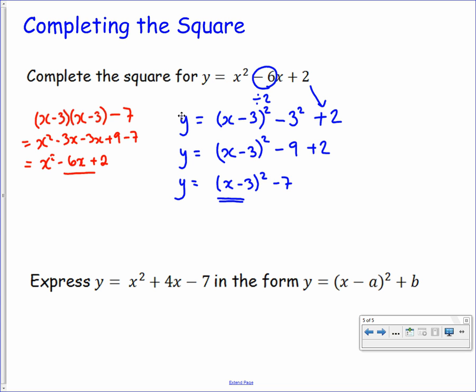The same goes for the second one here. Express y equals x squared plus 4x minus 7 in the form y equals x minus a all squared plus b. We're looking to do the exact same thing. We want to write it as a perfect square to begin with with some sort of adjustment. Into that bracket we need to have the x and then half of this positive 4, which is positive 2.